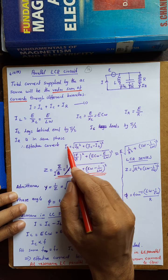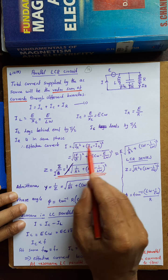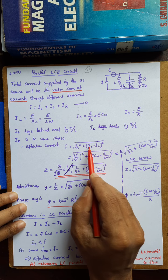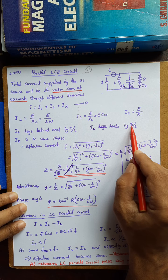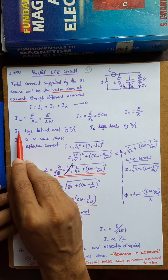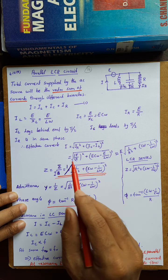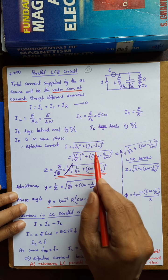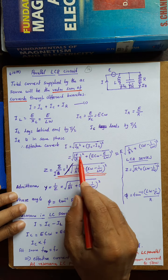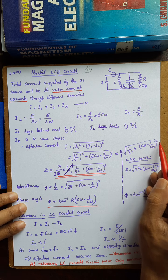Therefore, the effective total current I is the vector sum of current through inductance, capacitance, and resistance: I equals the square root of IR² plus (IC minus IL)². IC is taken as positive because it leads the EMF by pi/2, and IL is subtracted because it lags. Substituting, I equals E times the square root of (1/R)² plus (C·omega minus 1/(L·omega))².